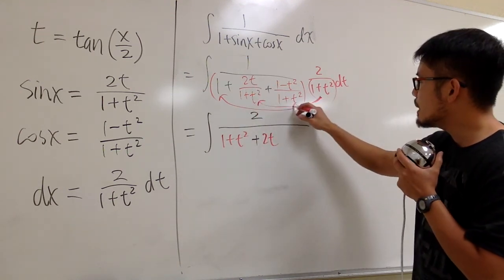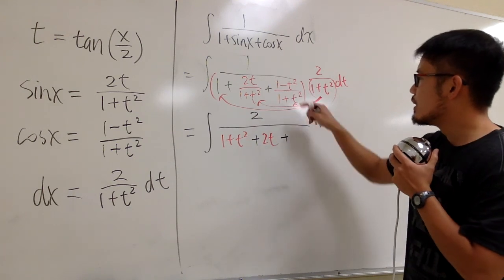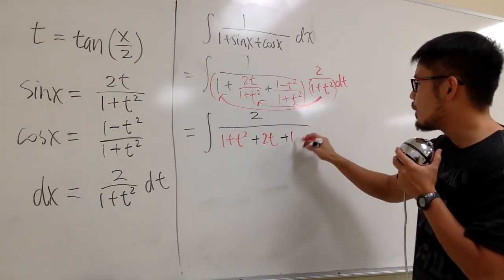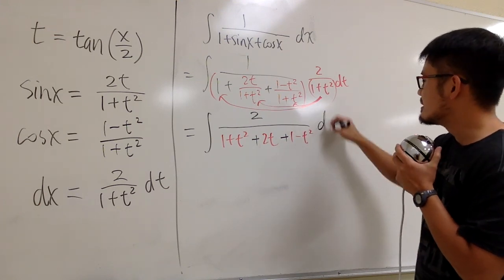And then we take this, multiply with that. So we add it with, once again, the 1 plus t squared, they cancel out. We will just have 1 minus t squared. Very nice. This is dt.